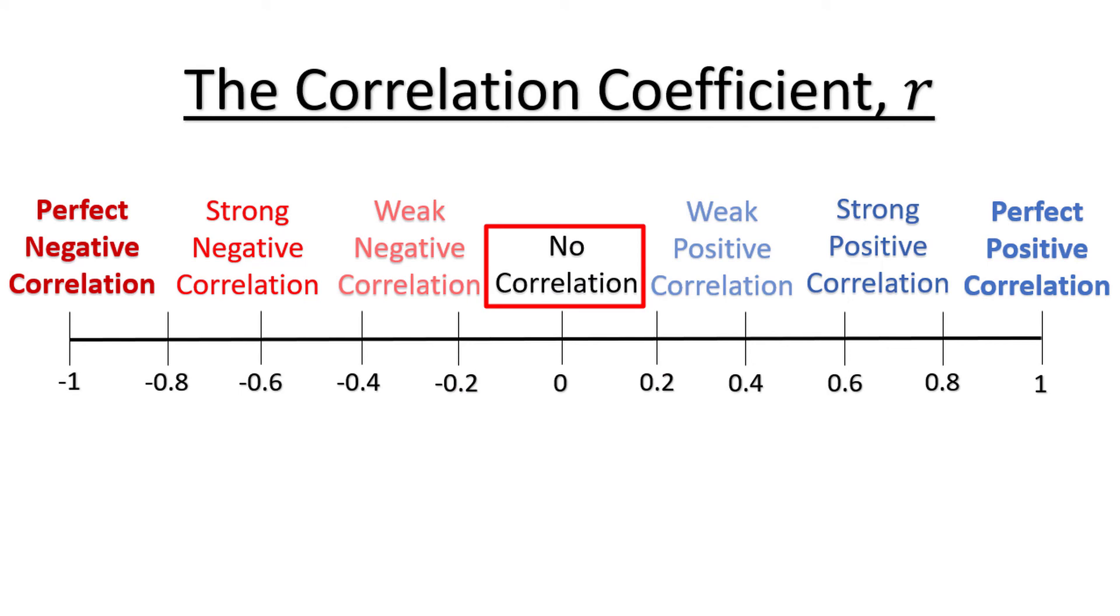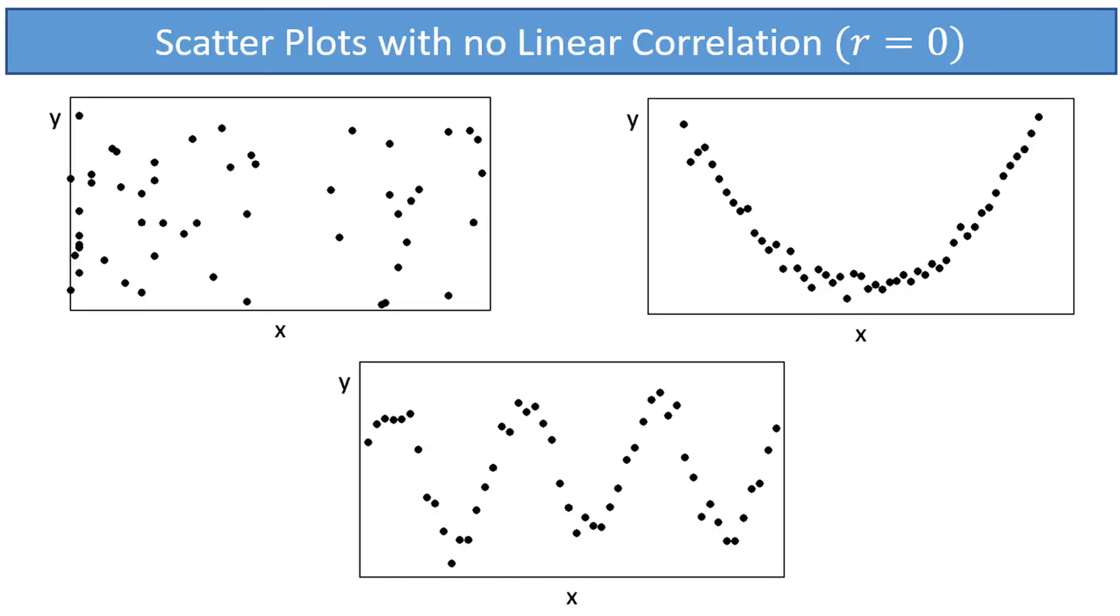So, you might be wondering, what does a scatter plot look like with no correlation? These three scatter plots all have correlation coefficients of approximately 0. The first one has dots everywhere. How would you draw a straight line through this data? Like this? Like this? Who knows? There is no good fit.